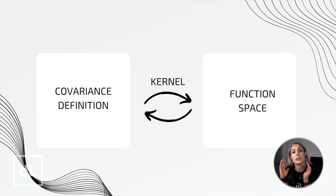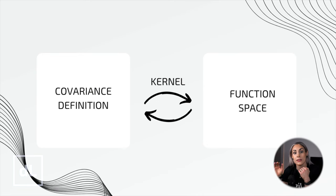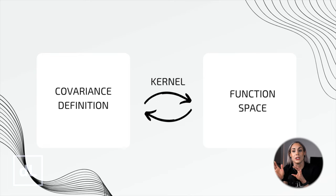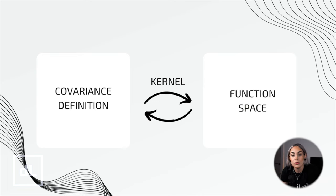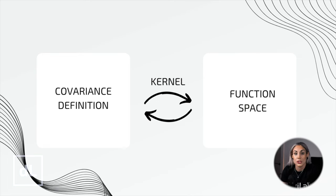In the previous tutorial, we talked about two ways of understanding Gaussian processes: as a way of modeling correlations and as distributions over functions. Defining a kernel allows us to sample functions with the desired correlation structure. Kernels serve as the mathematical bridge linking the covariance definition to the function space. When you pick a kernel, you're not just deciding how data points are related, but also setting up the characteristics of the functions you'll get. For example, the radial basis function kernel gives you very smooth functions, while other kernels may produce functions that are less smooth or continuous.